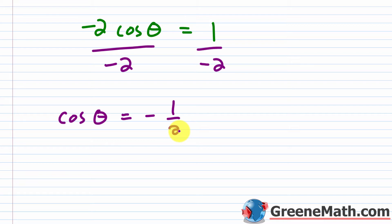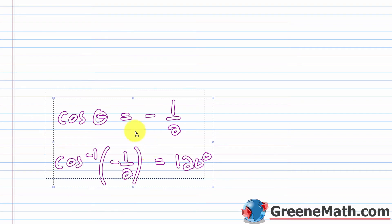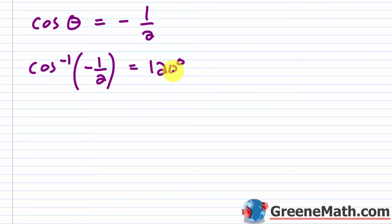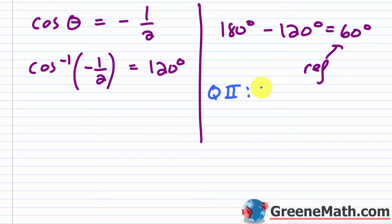This is an easy problem where you can use the unit circle, but let's use the inverse cosine function. Inverse cosine of negative 1/2 gives 120 degrees. The reference angle here is 180 minus 120 equals 60 degrees. Since cosine is negative in quadrants 2 and 3, the quadrant 2 solution is 120 degrees. For quadrant 3, take 180 plus 60 equals 240 degrees — that's my quadrant 3 solution.